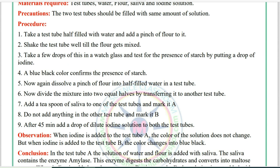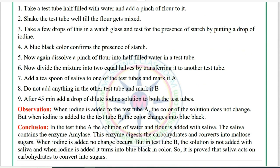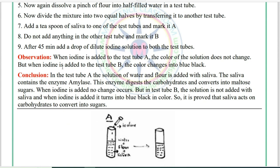Now dissolve a pinch of flour into half-filled water in a test tube. Divide the mixture into two equal halves by transferring it into another test tube. Add a teaspoon of saliva to one test tube and mark it as A. Do not add anything to the other test tube and mark it as B. After 45 minutes, add a drop of dilute iodine solution to both test tubes.